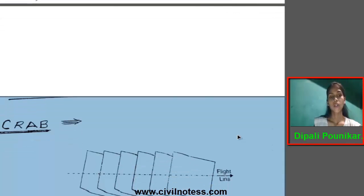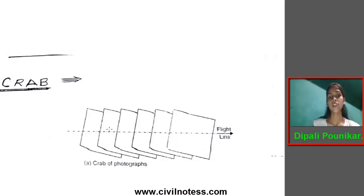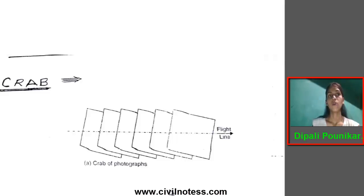Aerial photography is based on two terms. The first is 'crab,' as shown in the figure. Crab is the term used to designate the angle formed between the flight lines and the edges of the photograph in the direction of the flight line. At the time of exposure, if the focal plane of the camera is not square with the direction of flight, crab occurs. The camera is rotated about the vertical axis to correct the crab, and crabbing should be eliminated since it reduces the effective coverage of the photograph.